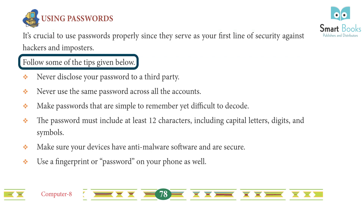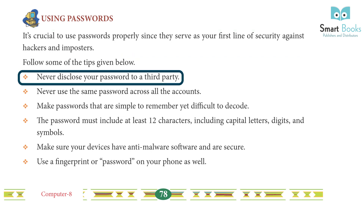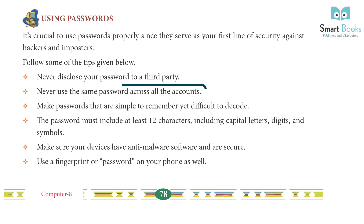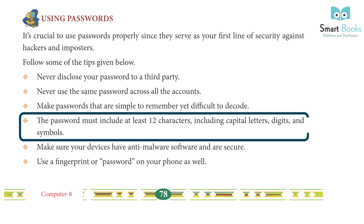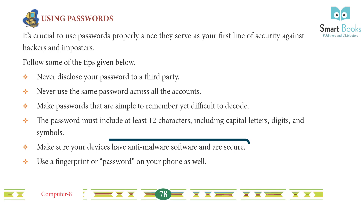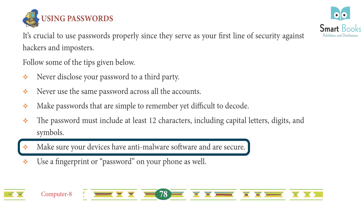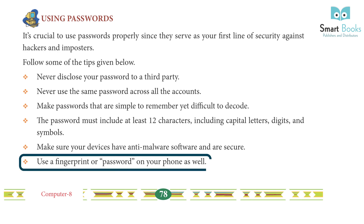Using passwords: passwords serve as your first line of security against hackers and imposters. Never disclose your password to a third party. Never use the same password across all accounts. Make passwords that are simple to remember yet difficult to decode. Passwords must include at least 12 characters, including capital letters, digits, and symbols. Ensure your devices have anti-malware software and use a fingerprint or password on your phone as well.